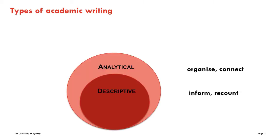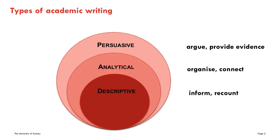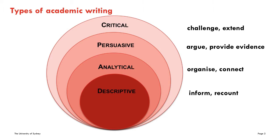There are four main types of academic writing you will be expected to produce at university. These are descriptive, analytical, persuasive and critical writing. This module deals with analytical writing, which is concerned with organizing or reorganizing the many pieces of information you will encounter in your readings.